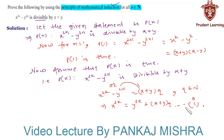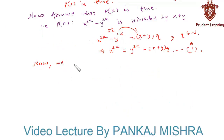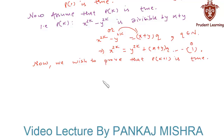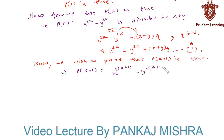In the last step, we wish to prove that P(k+1) is true whenever P(k) is true. P(k+1) equals x raised to 2(k+1) minus y raised to 2(k+1), which equals x raised to 2k+2 minus y raised to 2k+2. This can also be written as x to the power 2k into x squared minus y to the power 2k into y squared.